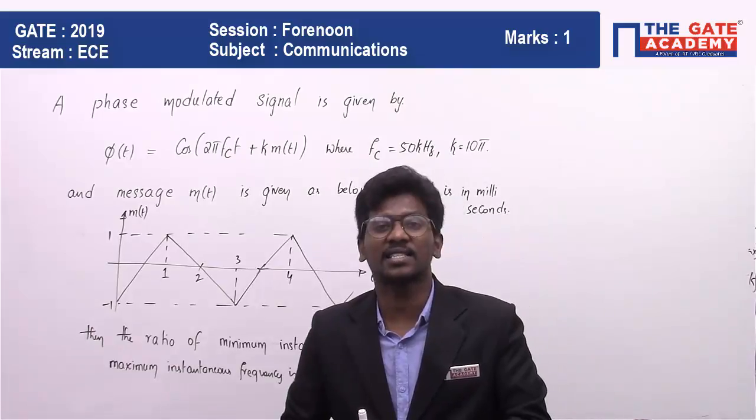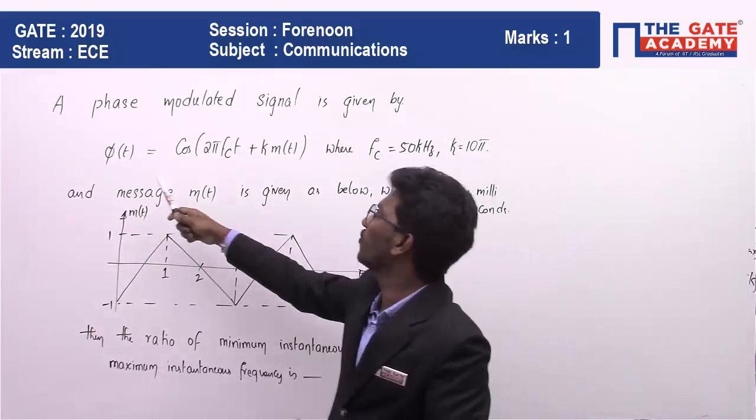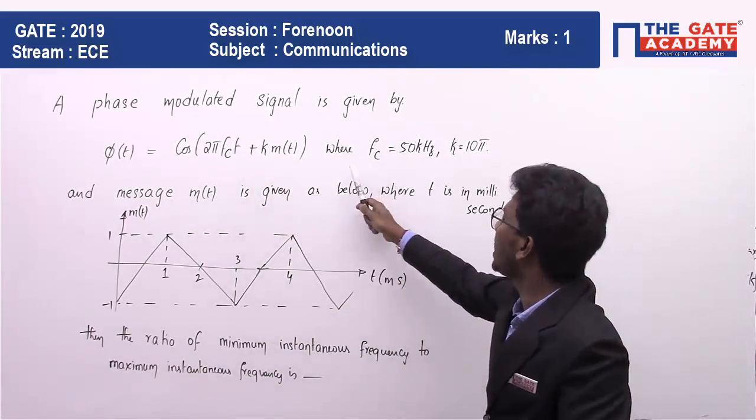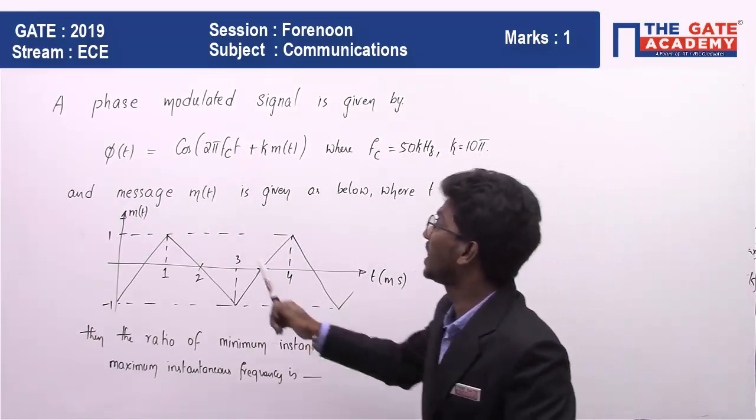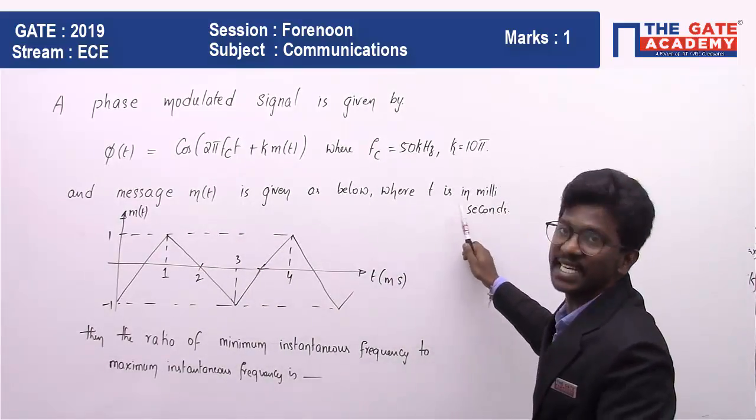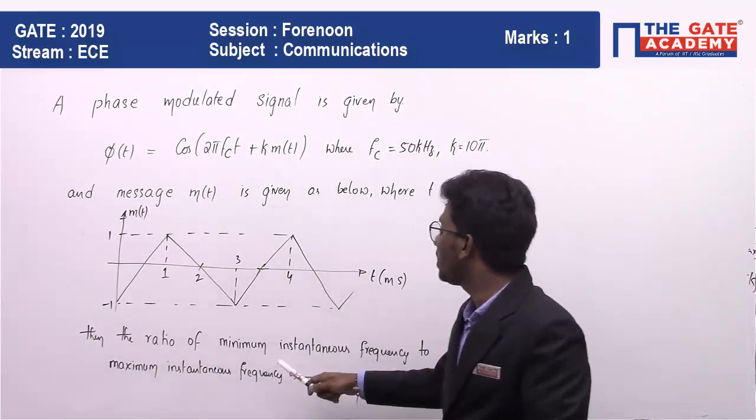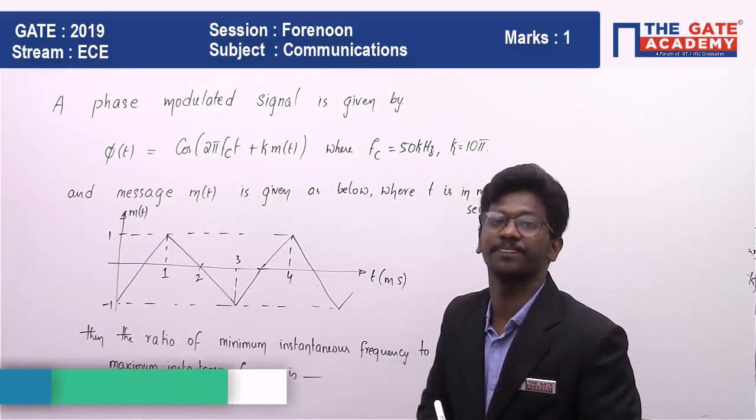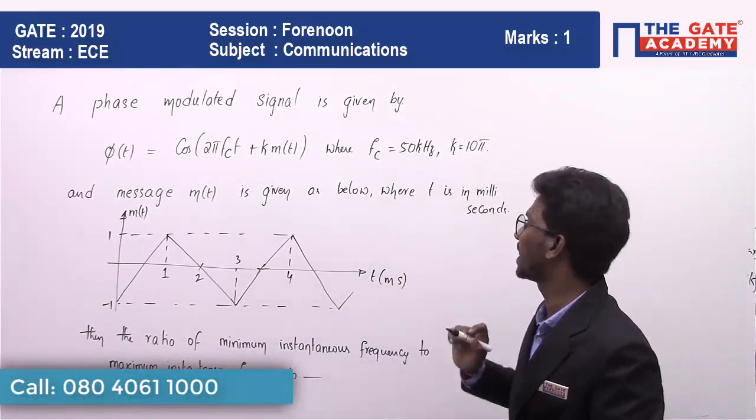First of all, let us start by reading the question. A phase modulated signal is given by φ(t) = cos(2π fc t + k·m(t)), where fc = 50 kHz, k = 10π, and message m(t) is given as below, shown in the figure where t is in milliseconds. Then the ratio of minimum instantaneous frequency to maximum instantaneous frequency is what? So he is asking instantaneous frequency in ratio minimum to maximum.